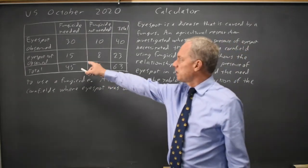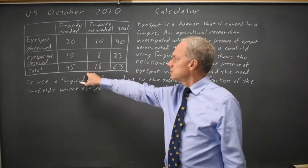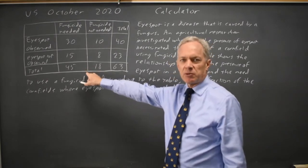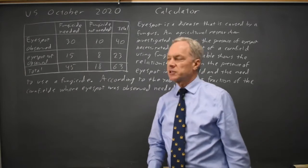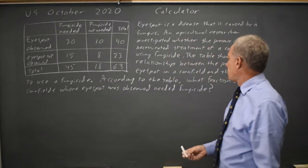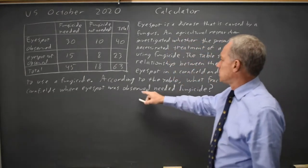The College Board gives us a table of values. This is called a two-way table because we have categories going in two different directions on the table, and they ask, according to the table,